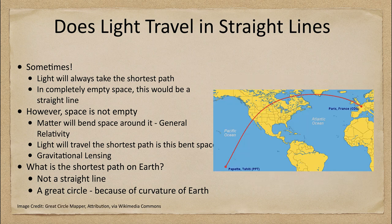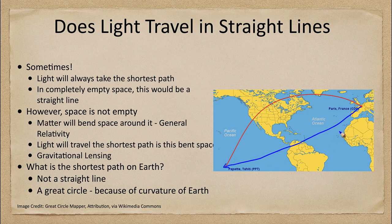Here is one example: if you were to travel a great distance — in this case from Paris to Tahiti — you would not travel what you might think is the straight line going from one right to the other. Why not? That is a much longer path than the great circle path, which is this curved arc.